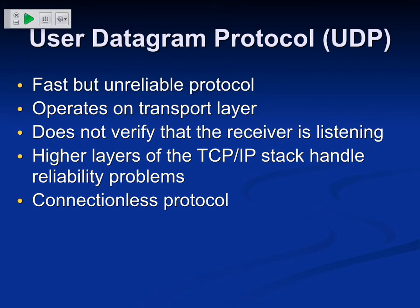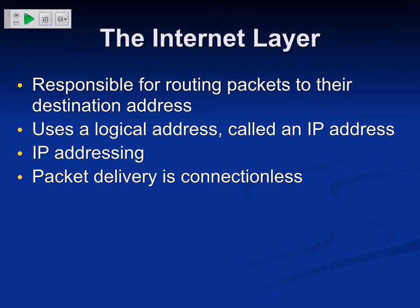UDP is a connectionless protocol, and they call it an unreliable protocol - which does not mean that it fails often. It means that you do not have receipts, so you do not know that the data got there the way you do with TCP. In practice it probably got there because most network connections work well more than 99% of the time, but you cannot prove it. You can send reliable data over UDP if you build an acknowledgement system at a higher level, and people do that.